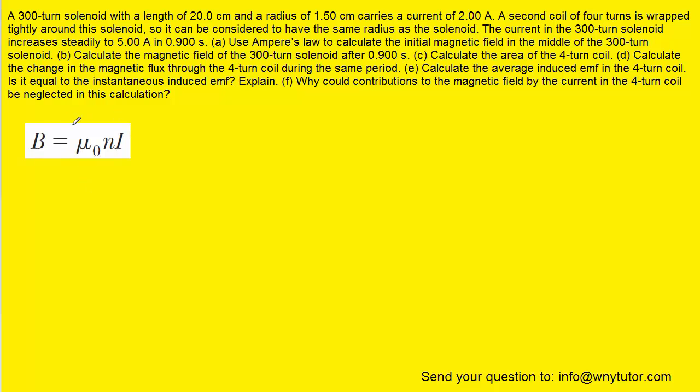This equation was actually presented in an earlier chapter on magnetic fields. We have a constant multiplied by lowercase n, which we'll talk about in just a moment, multiplied by the current. It turns out that lowercase n is the number of turns in the solenoid divided by the length of the solenoid.